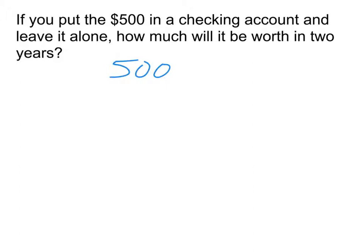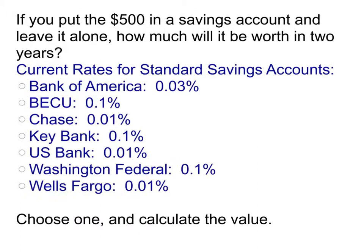So checking accounts — it's accessible, but sometimes that's a bad thing. If you're trying to save up towards something, that's where we get into the savings account. If we put the money into the savings account, how much would it be worth in two years? We need to know what they'll pay us for putting this money in savings. These are current rates for a standard savings account: Bank of America will pay 0.03% per year, BECU is better at 0.1%, but Chase is behind both at 0.01%.